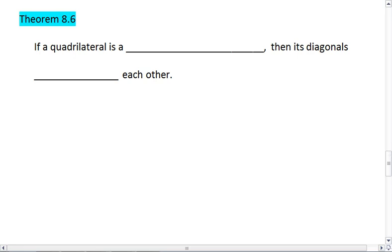Theorem 8.6 tells me that if a quadrilateral is a parallelogram, then its diagonals bisect each other, which means this. If I have a parallelogram,